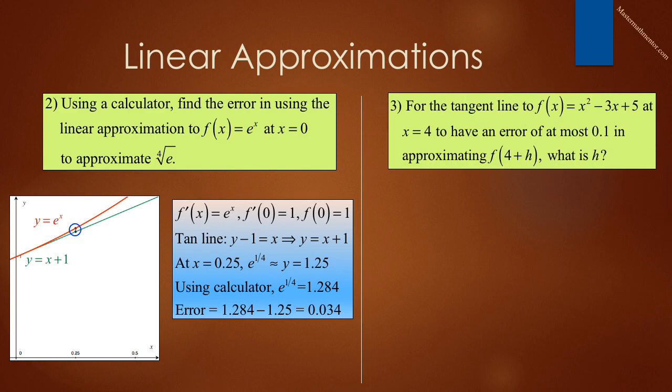Problem 3 reads, for the tangent line to f of x equals x squared minus 3x plus 5 at x is equal to 4, to have an error of at most 0.1 in approximating f of 4 plus h, what is h? For many students, this type of problem is difficult. It is not like previous problems, where you are asked to find the derivative or find the equation of the tangent line. For those, you had a specific blueprint of what to do. Here, no one tells you what to do. Look back at the graph on the previous problem. The circled section represents the error in using the tangent line approximation than actually using the real value. That is the error, and that's what we want to calculate.